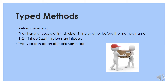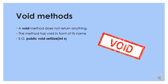What are typed methods? They are methods that return something. They have a type, e.g., int, double, String, or many other types before the method name. For example, if you have int getSize, it will return an integer. The type can be an object's name too. Void methods are methods that do not return anything, and the method will just have void in front of its name — like the example: public void setSize(int s).